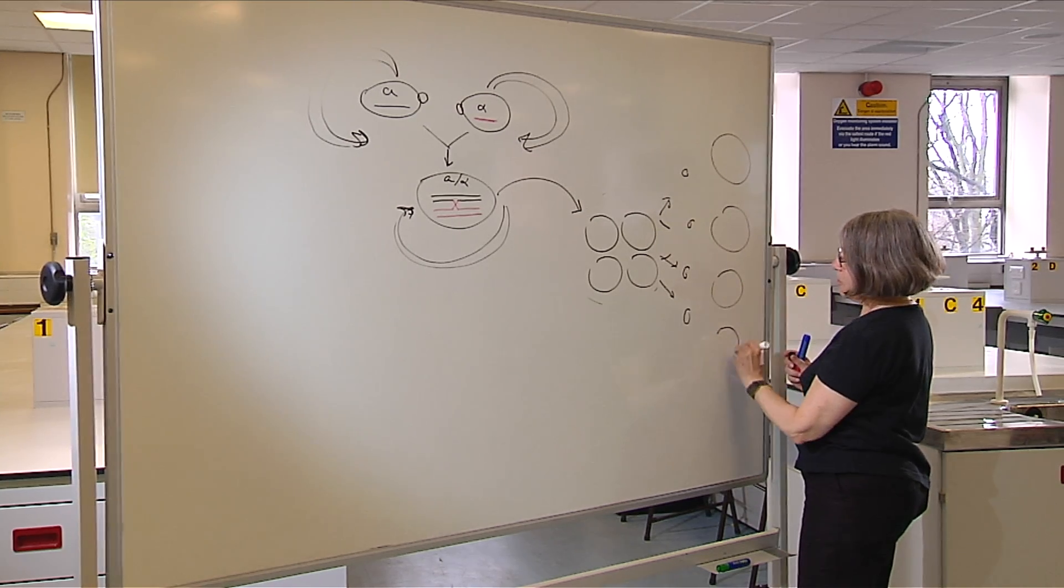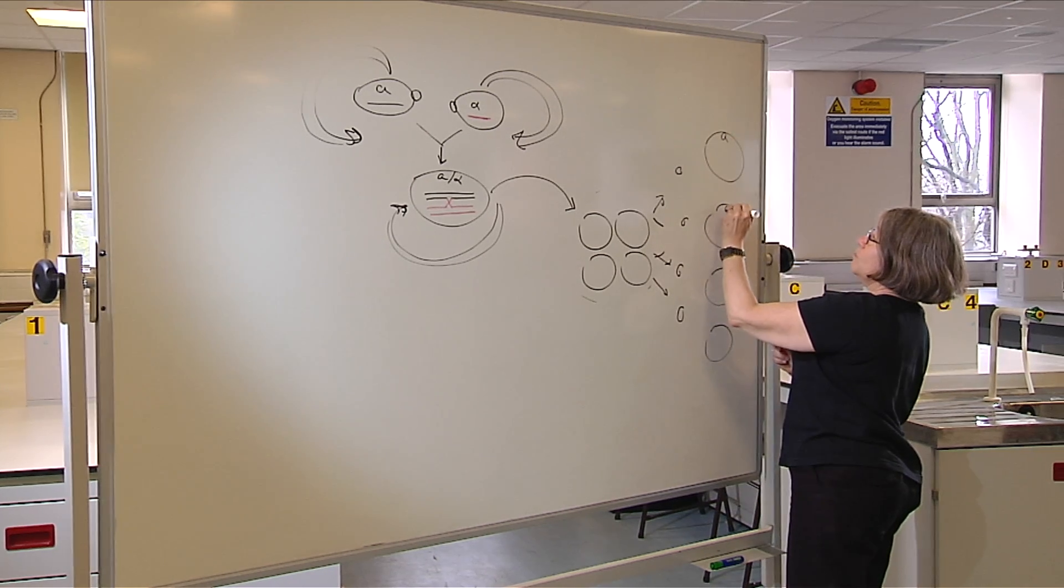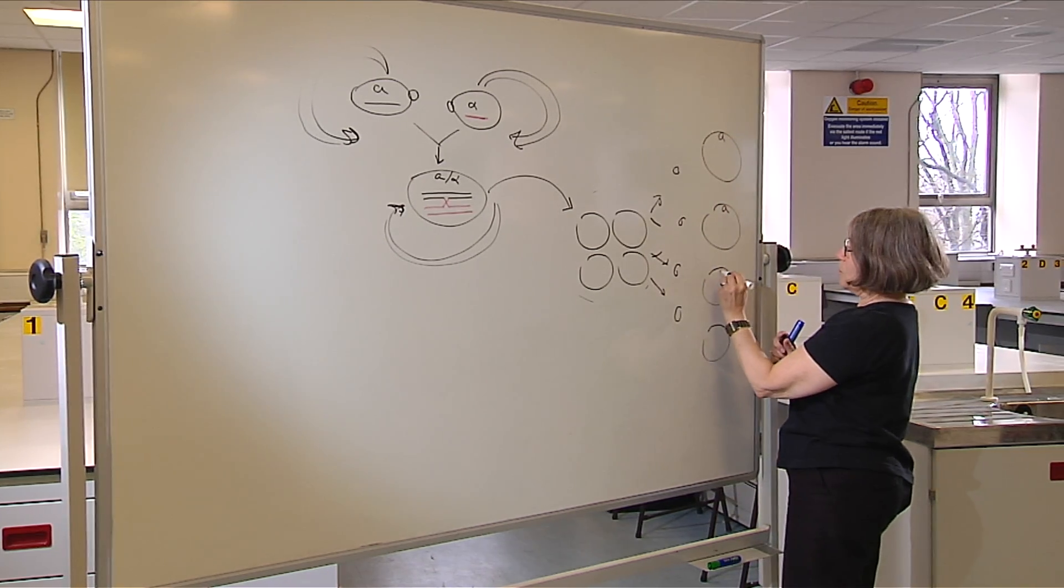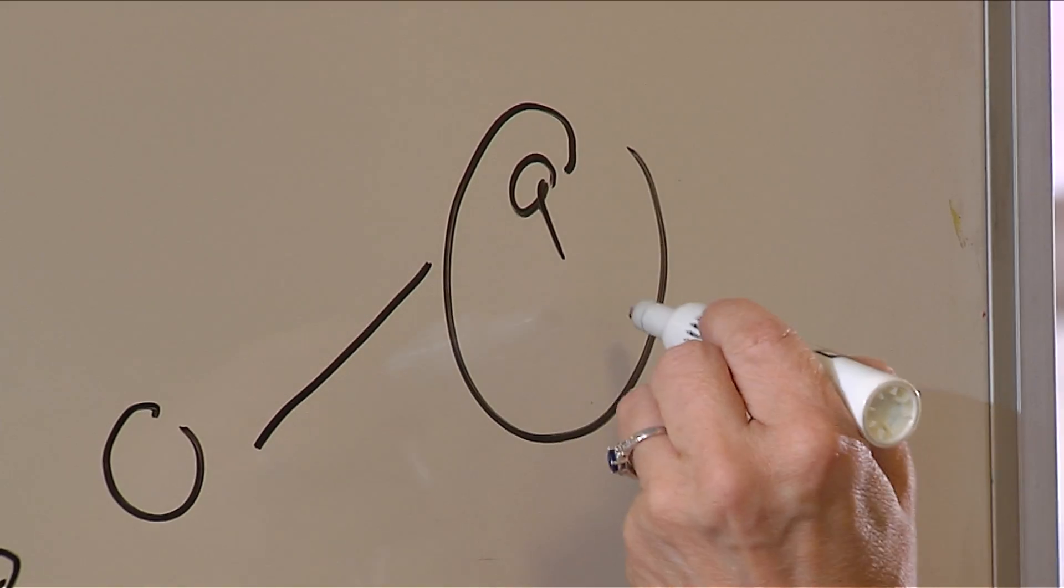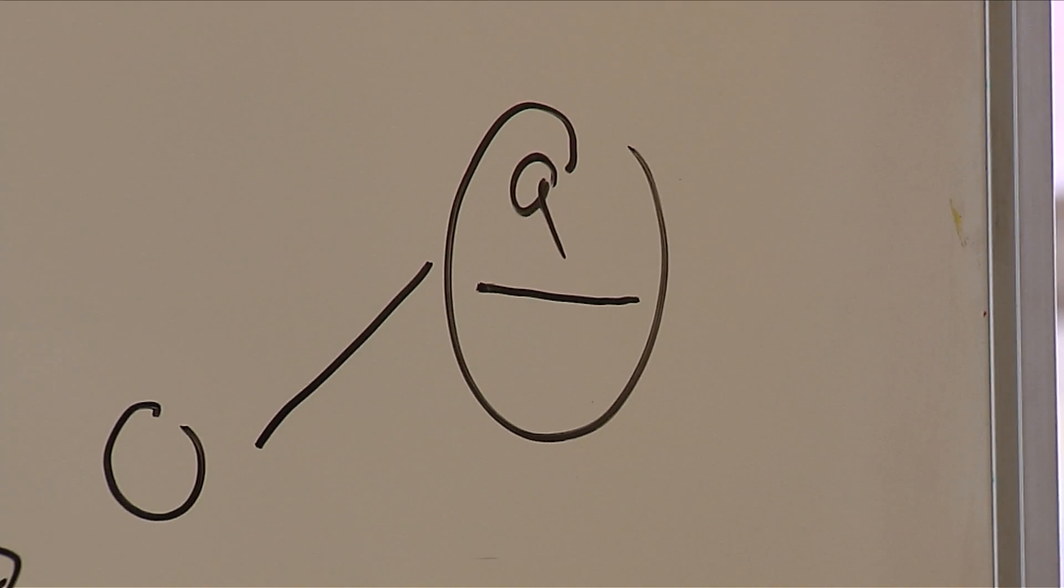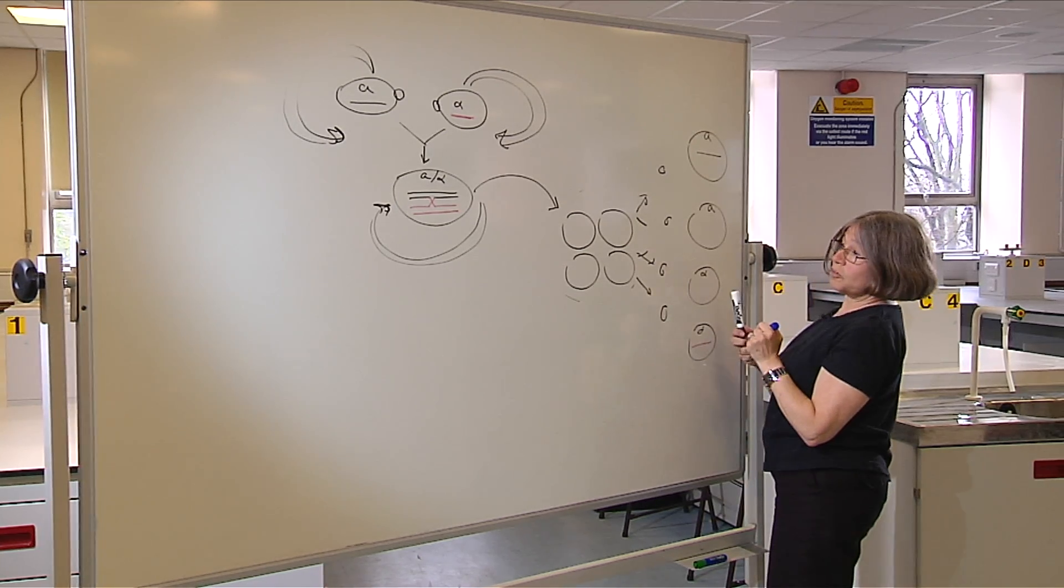What we can tell then is that two of the spores will have A information, two of the spores will have alpha information. One spore will have the black chromosome and one spore will have the red chromosome.